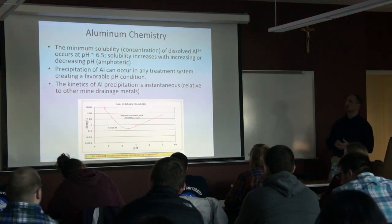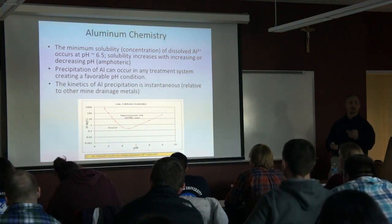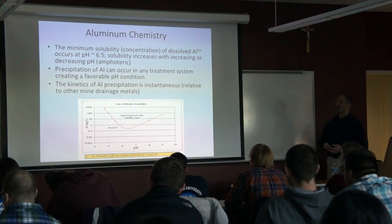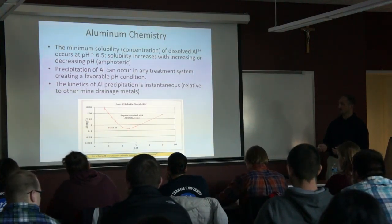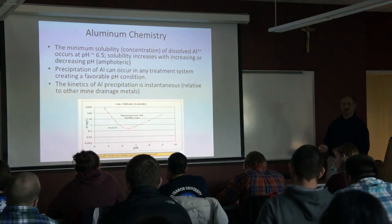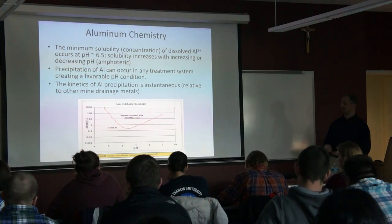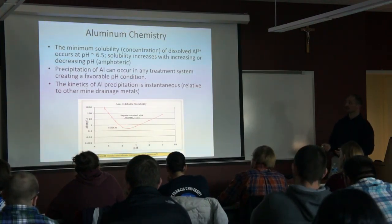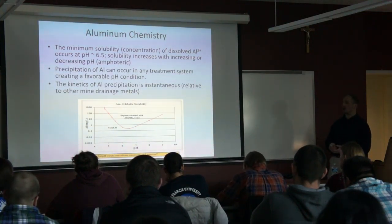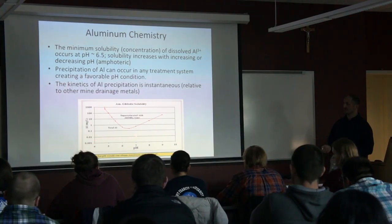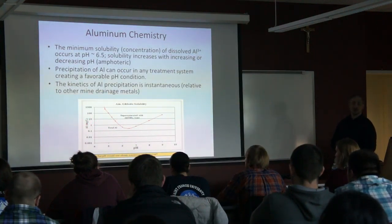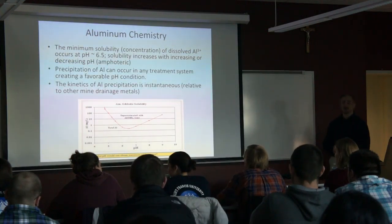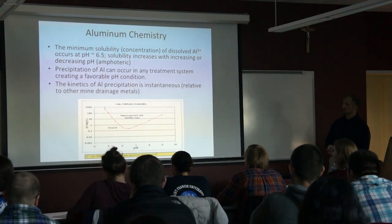Now for aluminum chemistry — the simplest of the three main metals. All you have to do is raise pH and aluminum will come out of the water. The preferential pH is about 6.5. Once you hit pH 6.5, aluminum basically does not want to be dissolved in the water at all — that is its minimum solubility. Oxygen plays no role; all aluminum cares about is the pH. When designing a system to deal with aluminum, all you want to do is raise the pH to at least 6 to 6.5, achieving below 1 mg/L dissolved aluminum.